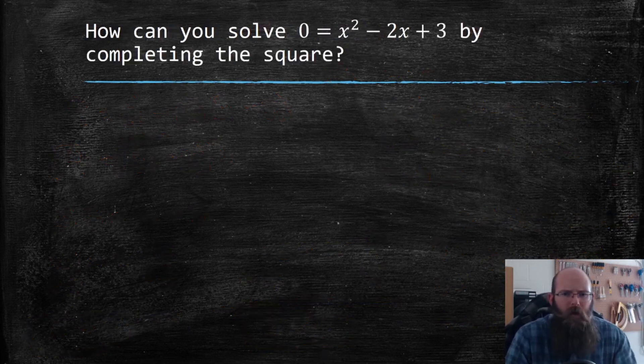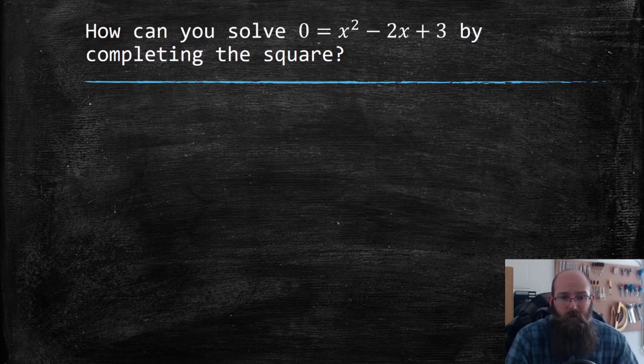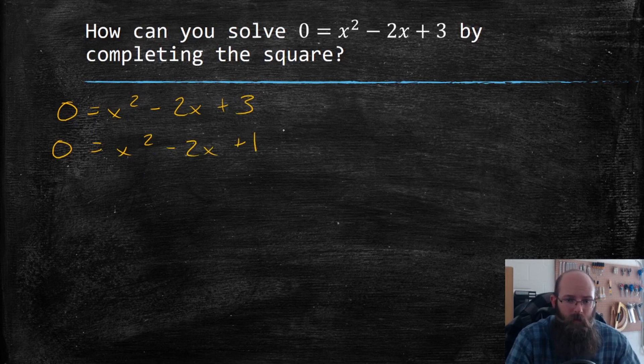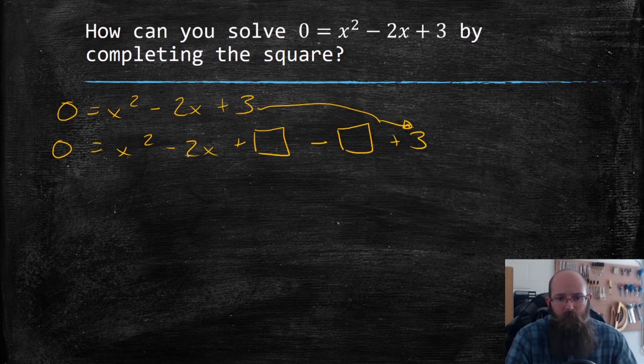So how can I solve this equation now by completing the square? So there's definitely nothing on the left I can do because it's just a zero now. So let us try and complete this square here. I'm starting off by writing the original. Now I'm actually going to add in squares. So x² - 2x plus a square minus a square and then there's that plus three. So that plus three I'm just dragging over there hanging out.